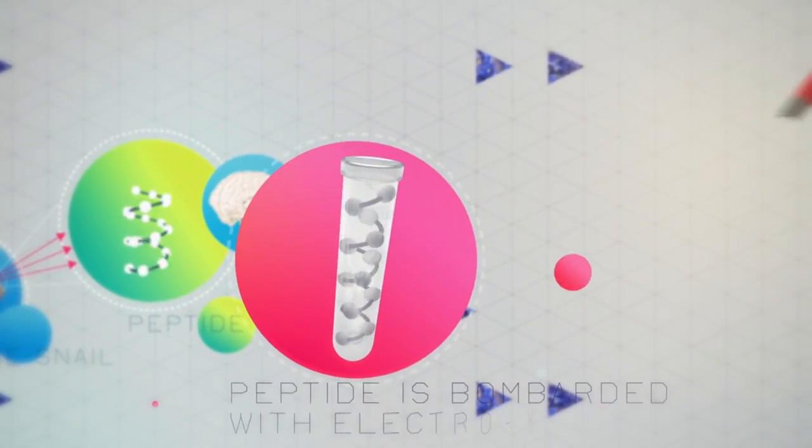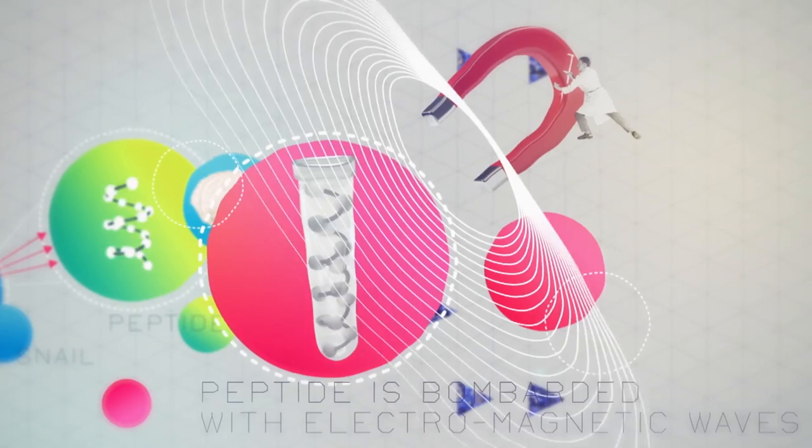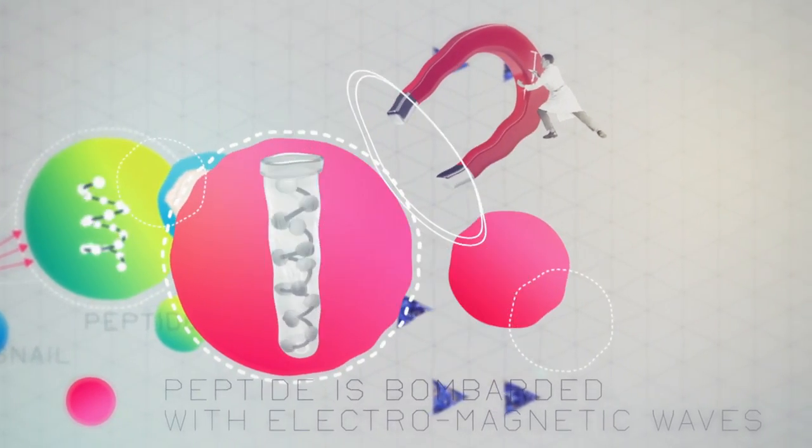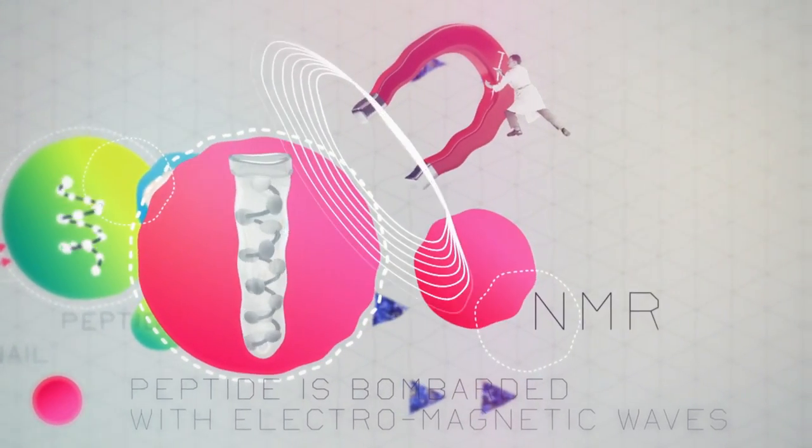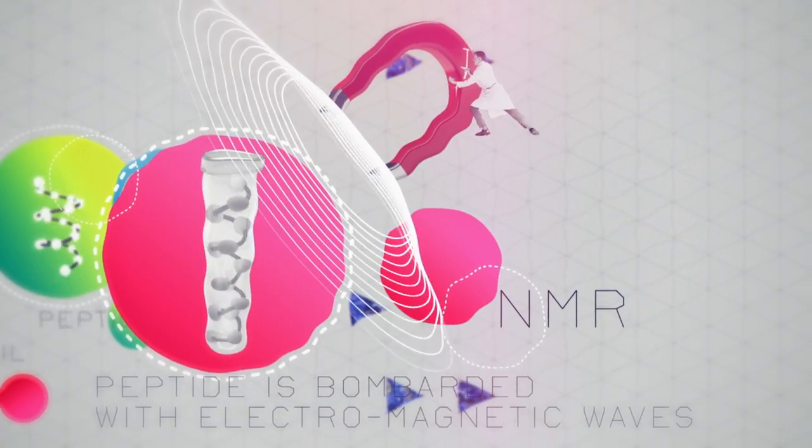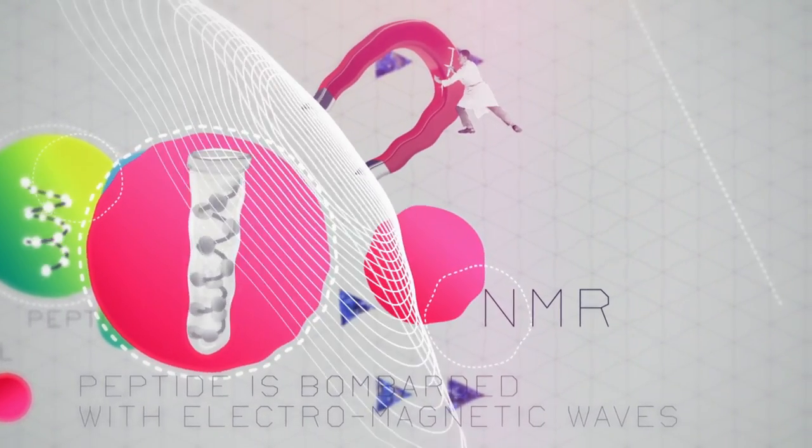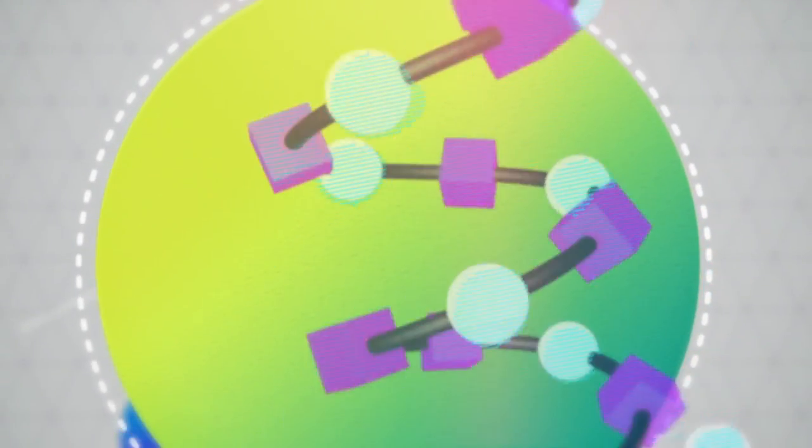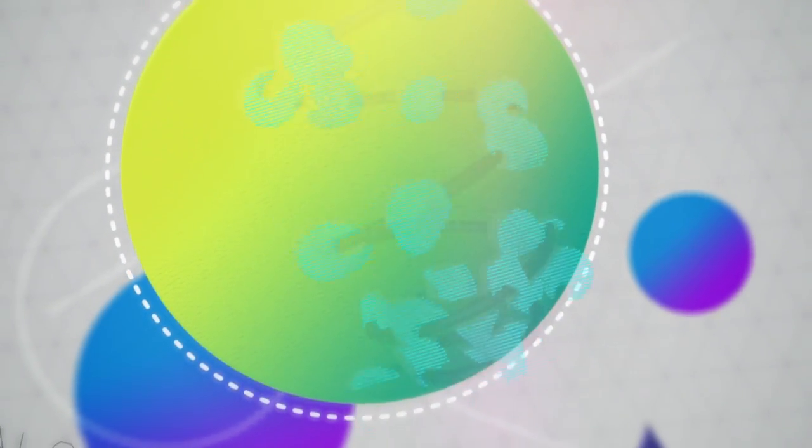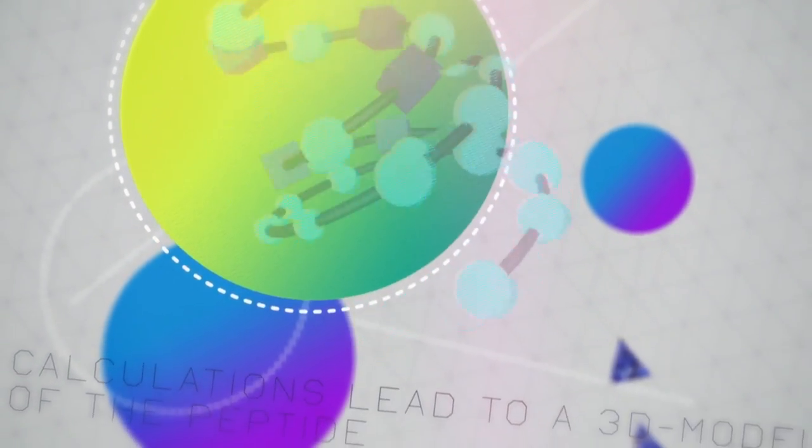To find out what the structure looks like, the peptide is bombarded with electromagnetic waves. This technique is called NMR. It allows us to measure the distances between the individual atoms in the peptide. But it doesn't reveal the actual three-dimensional structure.